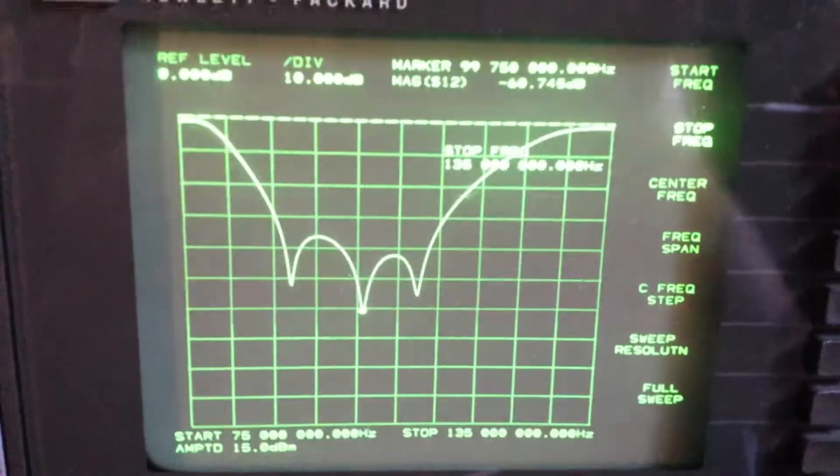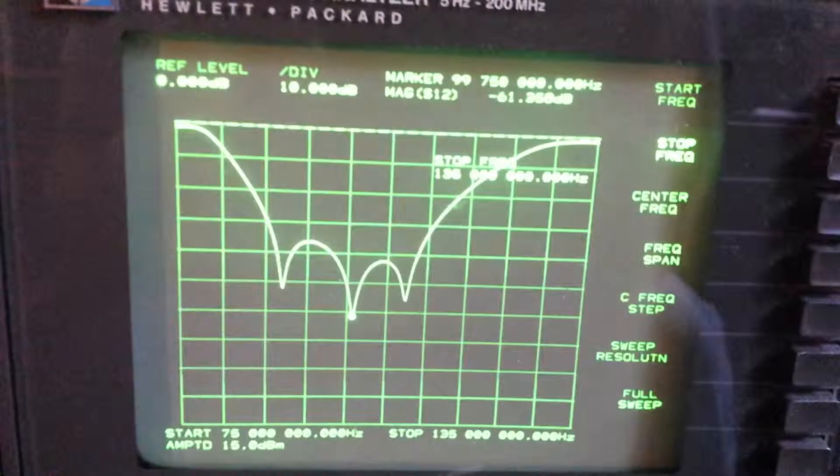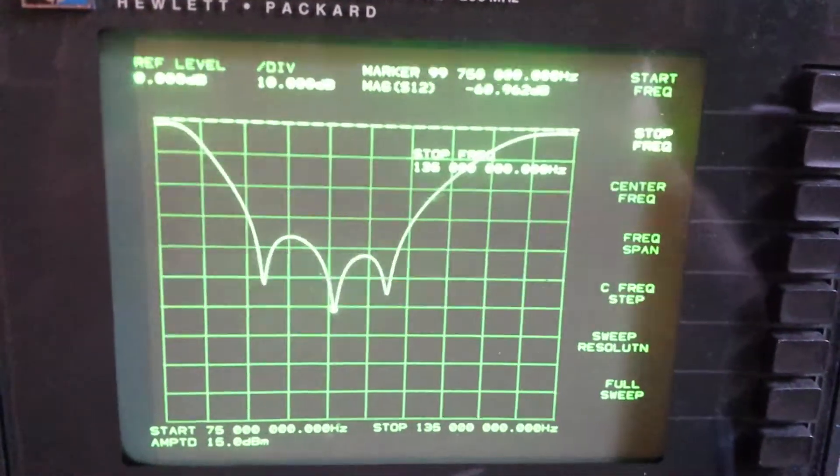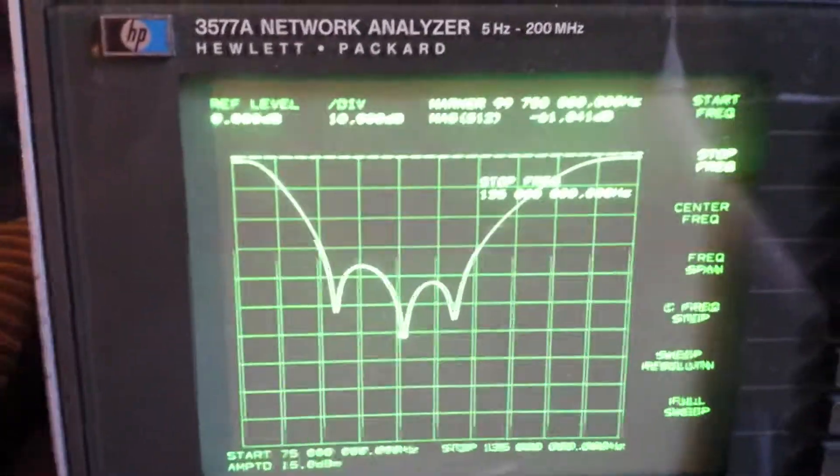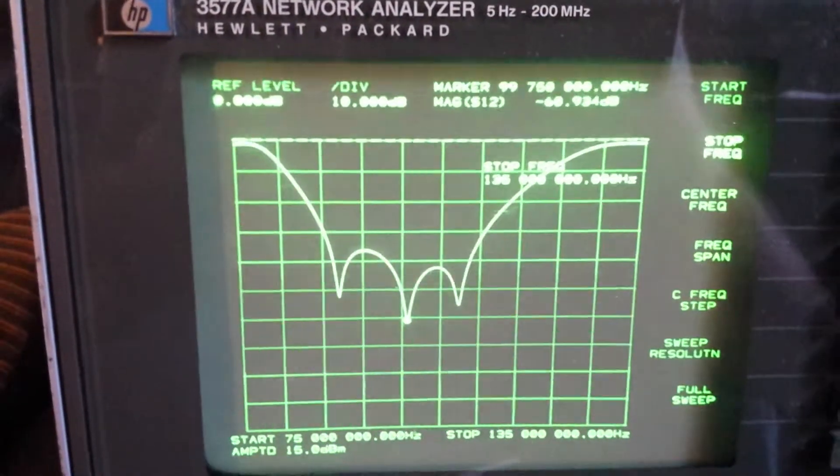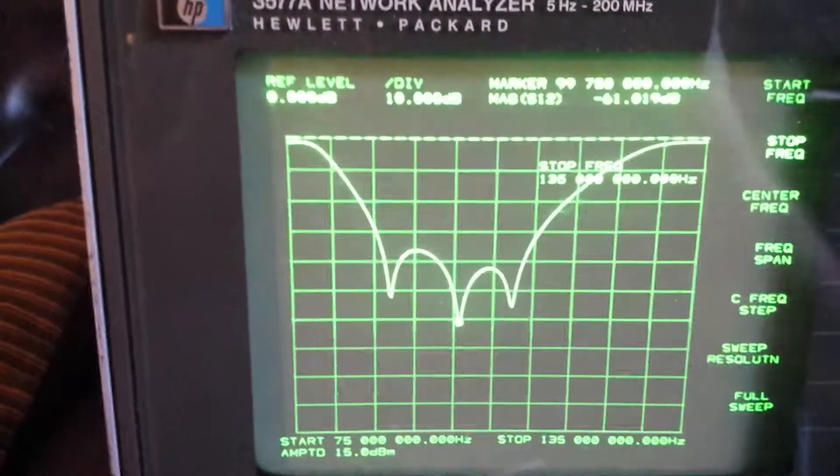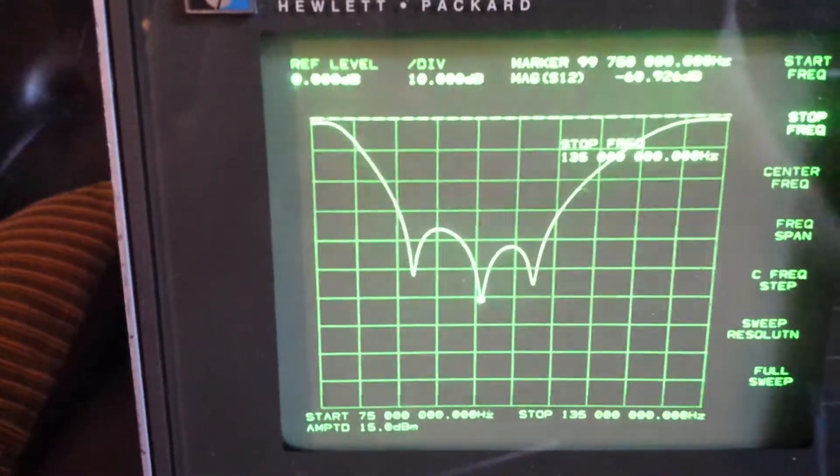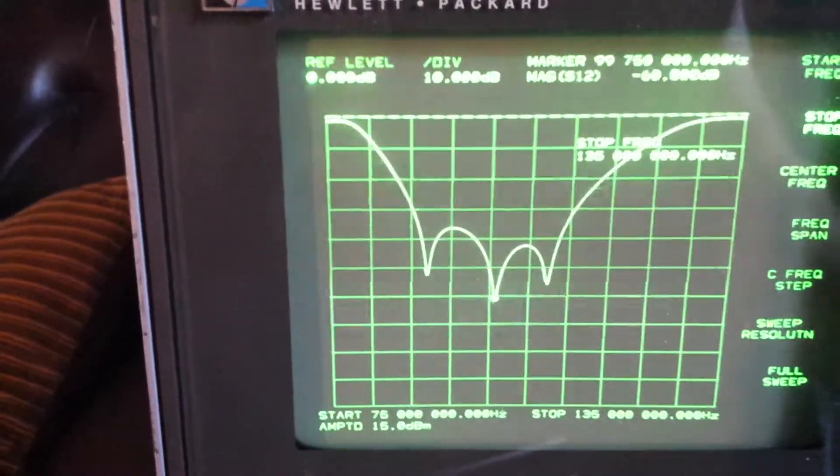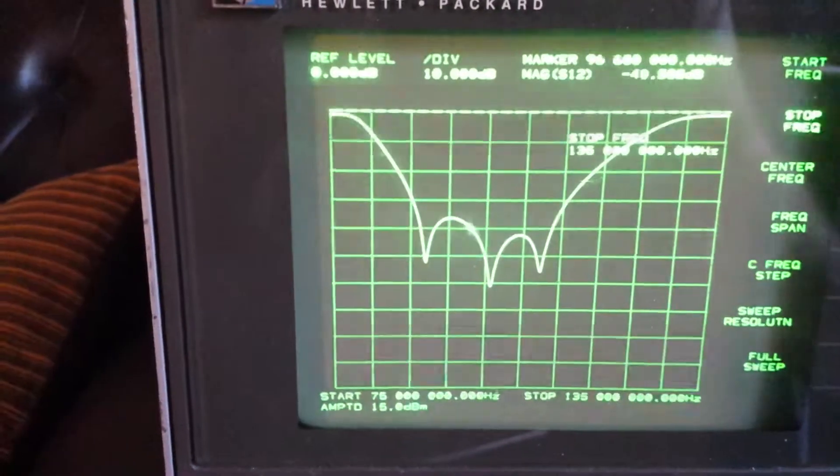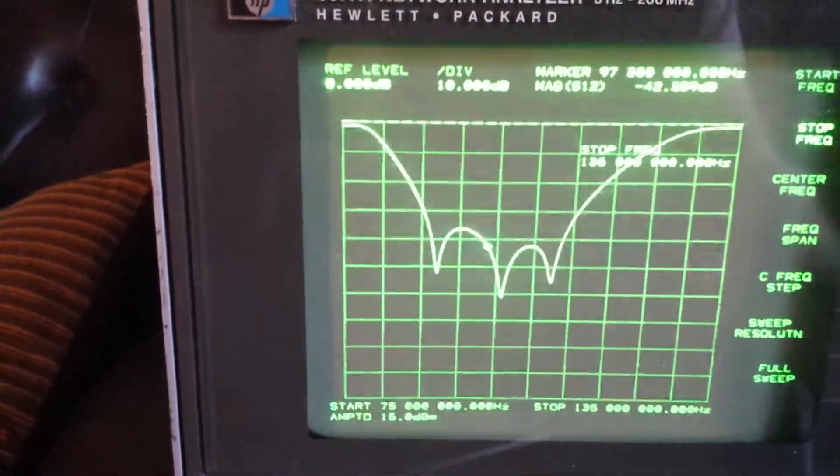This is a S12 test through the filter and looks like the peak attenuation is right around 60 dB. And that is right at 100 MHz, 99.75 MHz. And it's got a couple of peaks in here.